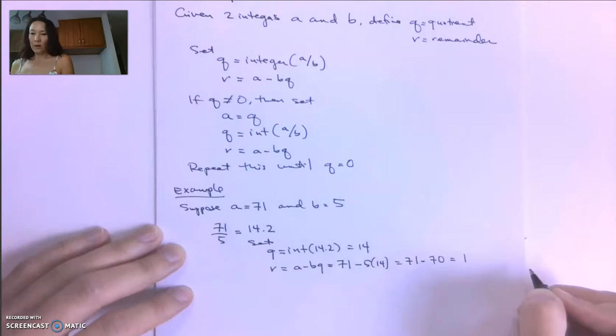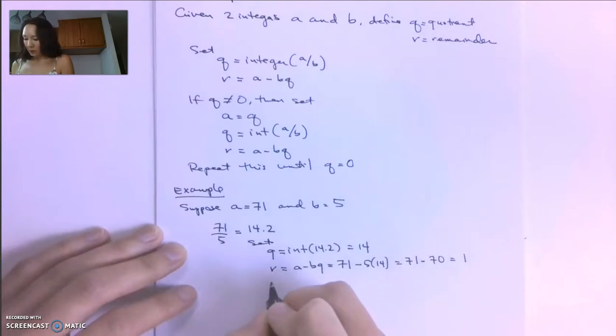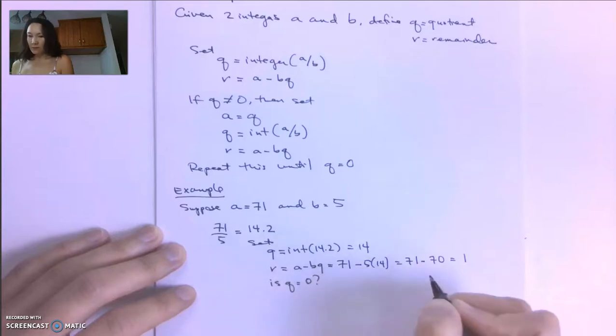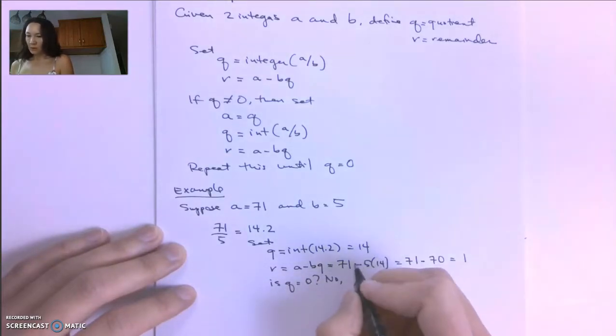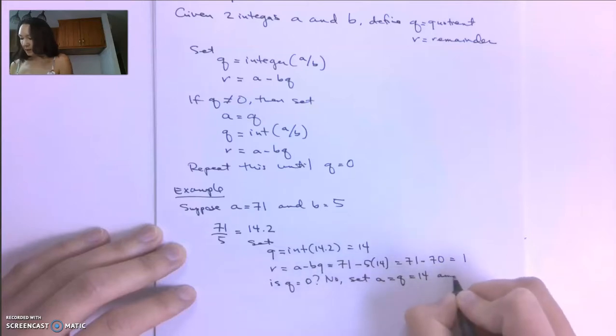So the remainder is 1. At this point, we want to ask ourselves, is Q equal to 0? Q is equal to 14, so the answer is no. Then we're going to set A equal to Q, which is 14, and we're going to repeat.